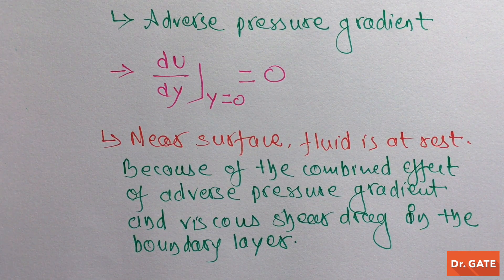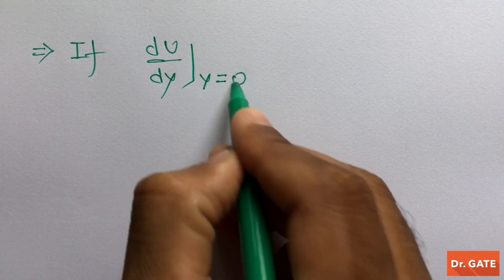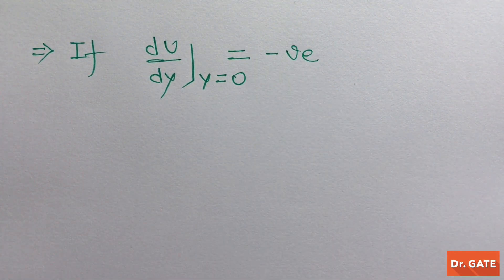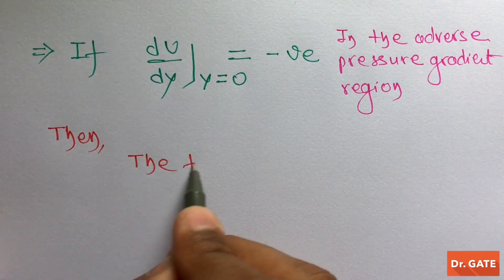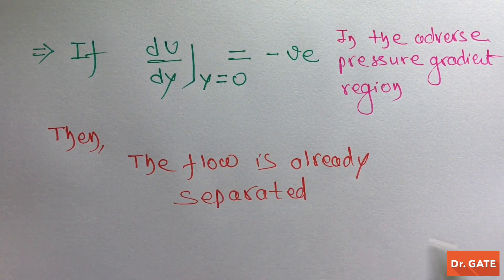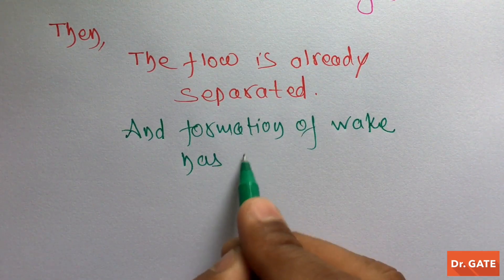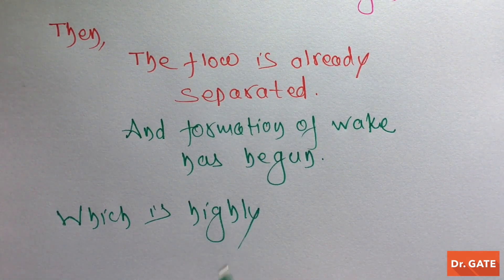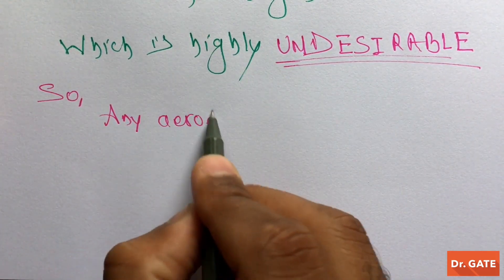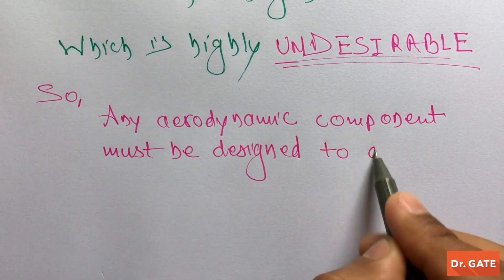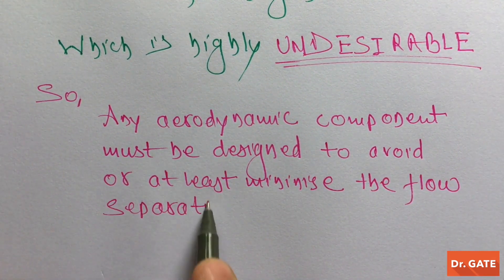One should also note that if du/dy at y=0 is negative in the adverse pressure gradient region, then the flow is already separated and the formation of wake has already begun, which is highly undesirable. So any aerodynamic component must be designed to avoid or at least minimize flow separation.